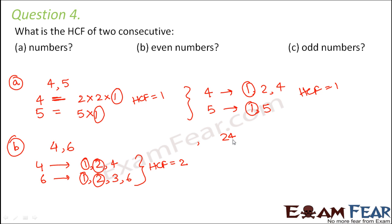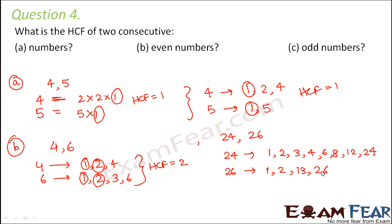Let's take another example: 24 and 26. Factors of 24 are 1, 2, 3, 4, 6, 8, 12, and 24. Factors of 26 are 1, 2, 13, and 26. Again the common factors are 1 and 2, so the HCF is 2. For any two consecutive even numbers — like 4 and 6, 24 and 26, 28 and 30, or 2 and 4 — the HCF will always be 2.